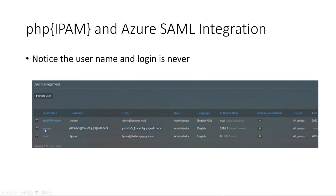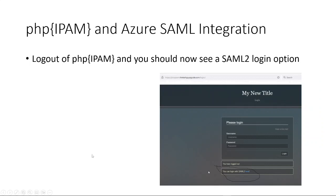We'll hit Add and that will create the user in PHP IPAM. You can see here that George Smally is in there — he's never logged in. Next, we will log out, and as you can see now there's a login option with SAML 2 over here.